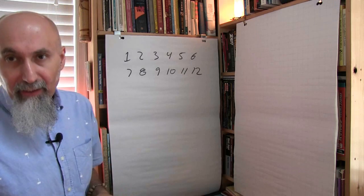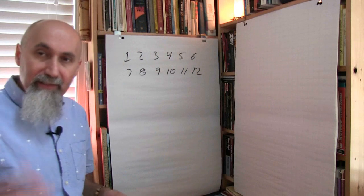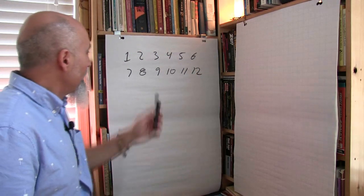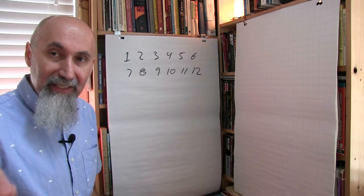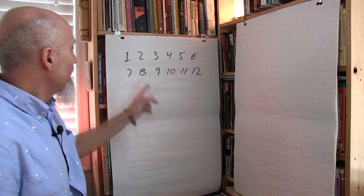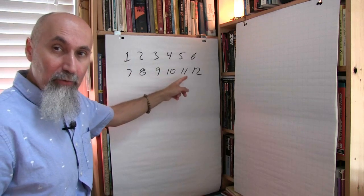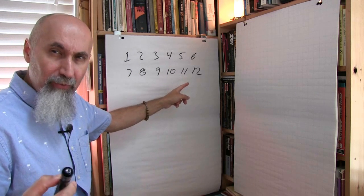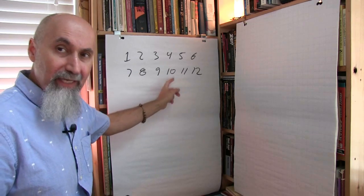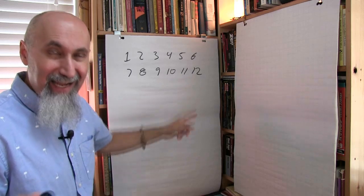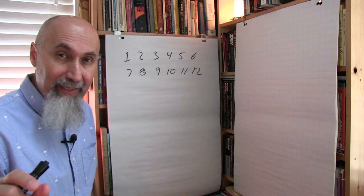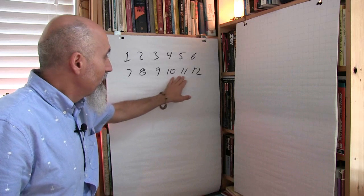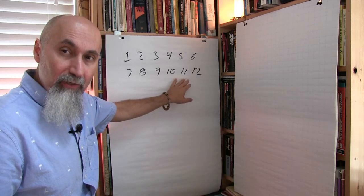When you're learning how to count, or teaching someone the counting process, keep in mind that in English each of these numbers — 1 through 12 — has their own unique name. That's not the case in other languages. In other languages, 11 is generally 10 plus 1, 10 plus 2. But in English, 11 and 12 have their unique names, so some kids have a hard time getting 11 and 12 into their vocabulary.